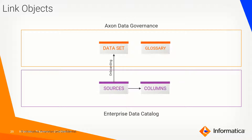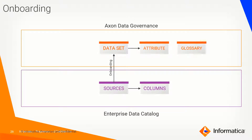Once I onboard the information from Enterprise Data Catalog, it will automatically create attributes and datasets. A dataset is roughly the representation of tables or files for my physical metadata. Attributes are the representation of columns or fields on the Axon side for a given glossary. Taking email as an example — email might be discovered at multiple places by Enterprise Catalog, and once linked to the glossary, all that information will be onboarded into the Axon side, so the Axon glossary for email will have multiple entries.